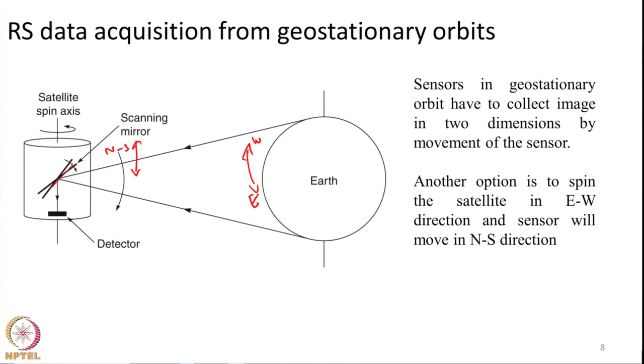This east-west scanning can be done in two ways. The scanner itself can move in two ways — for example, first it scans in the north-south direction, scans one line, then comes back and scans the next line. Or the scanner itself can move in two dimensions — up, down, left, right. In some satellites the east-west movement is provided by spinning the satellite along its axis. Around this axis the satellite will be made to spin in order to cover the east-west direction. As the satellite does one spin, the scanner will scan one line.